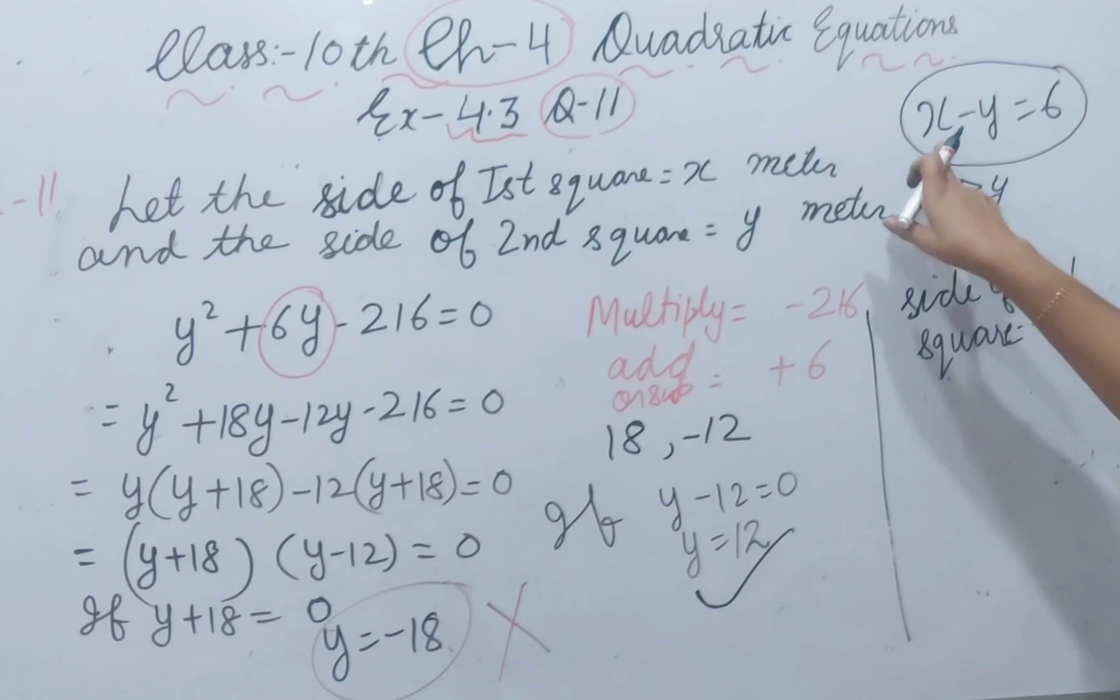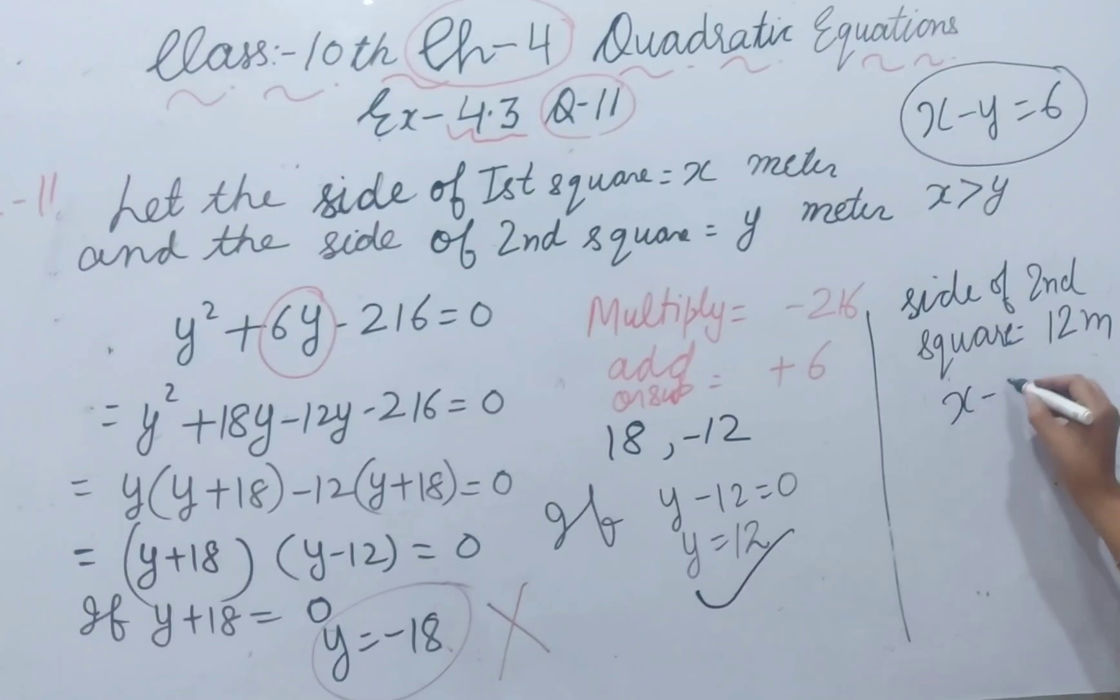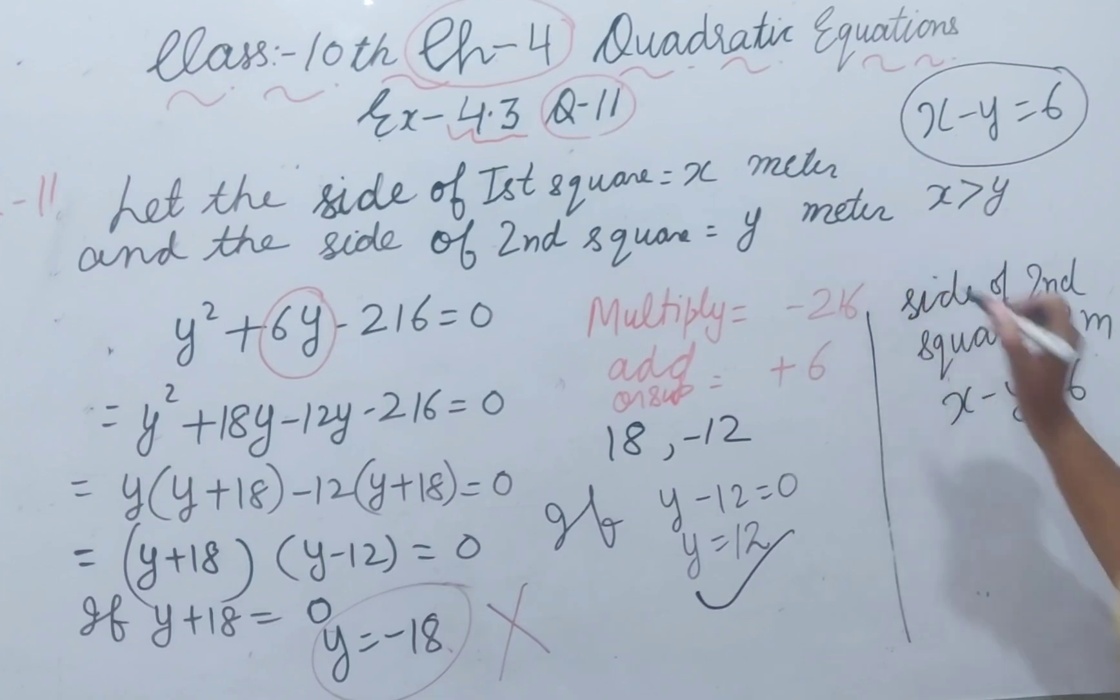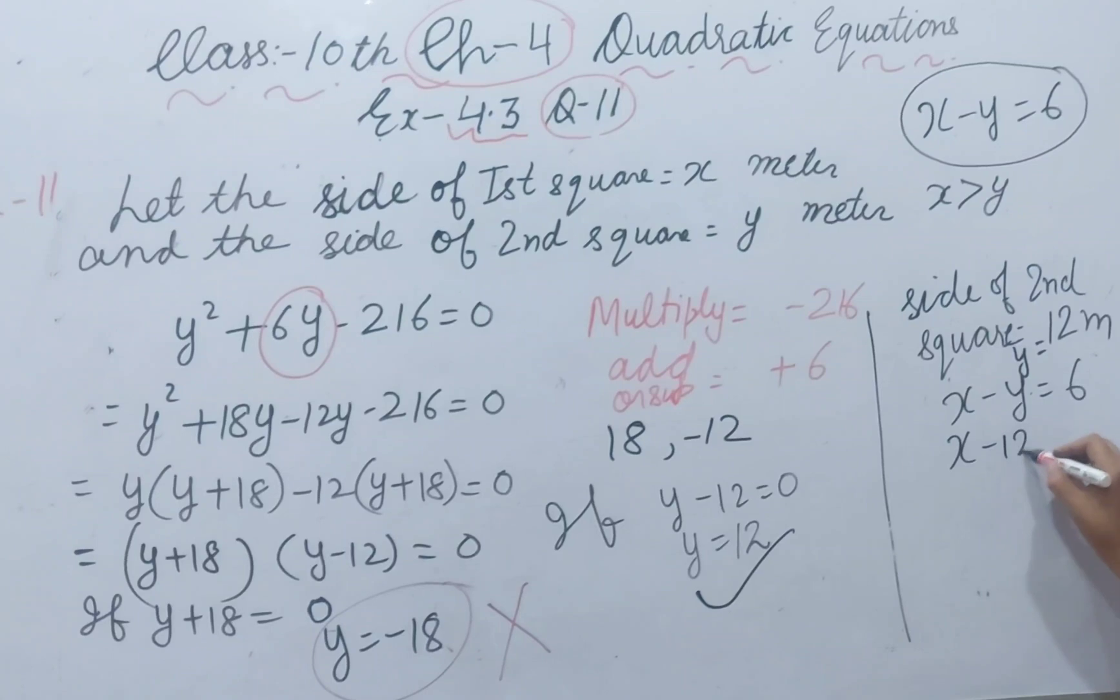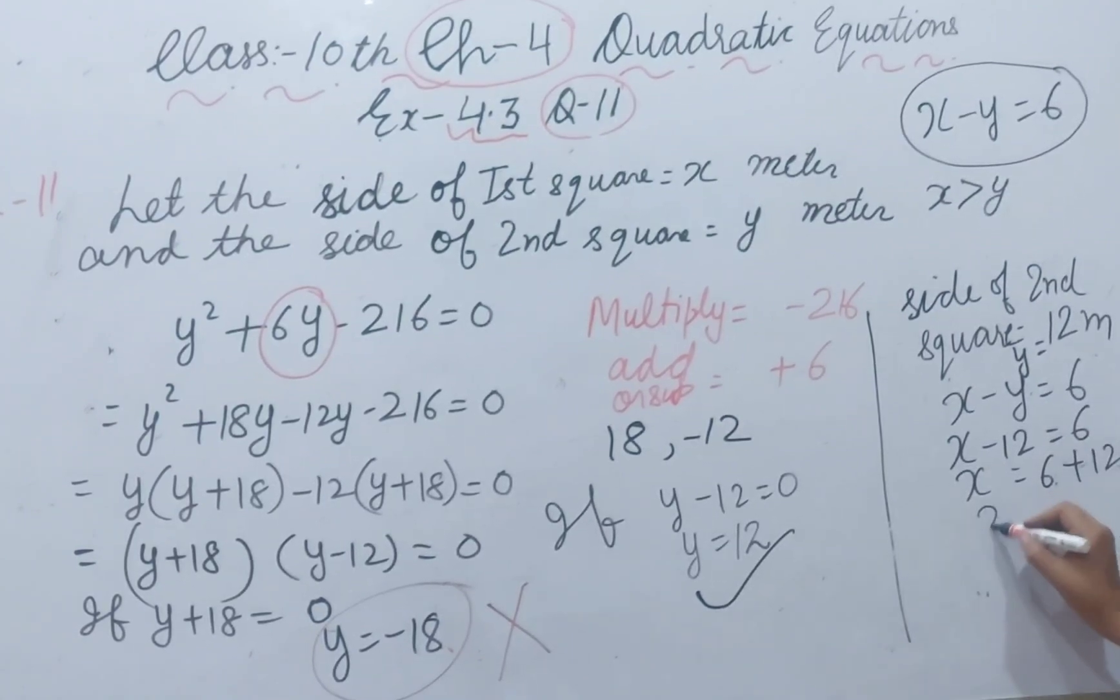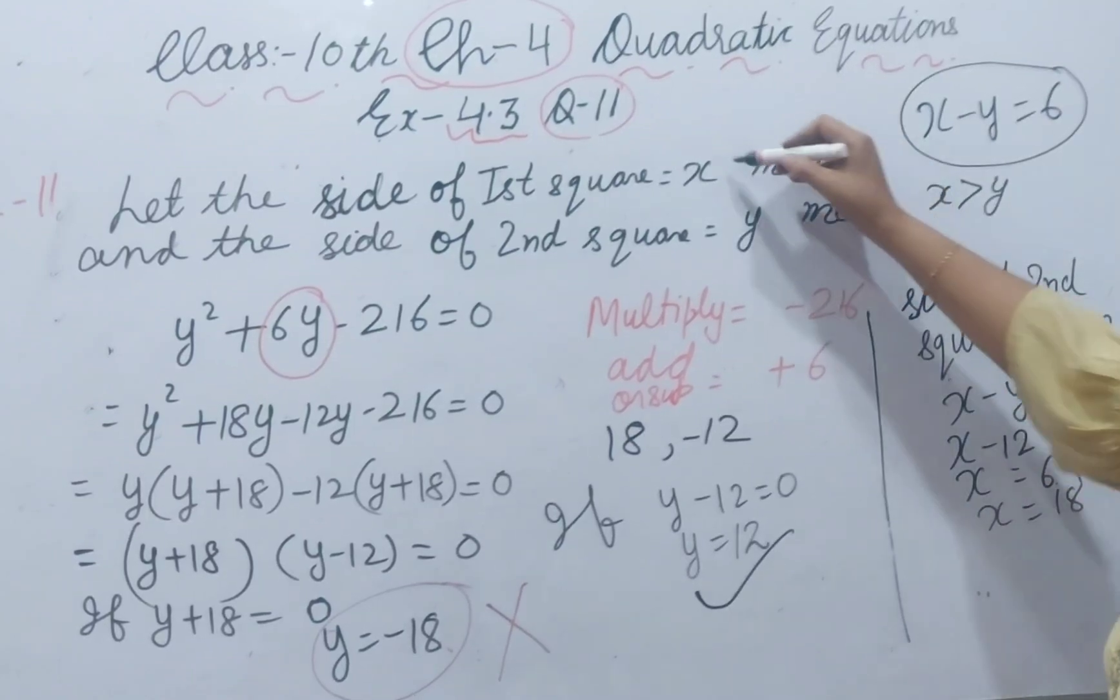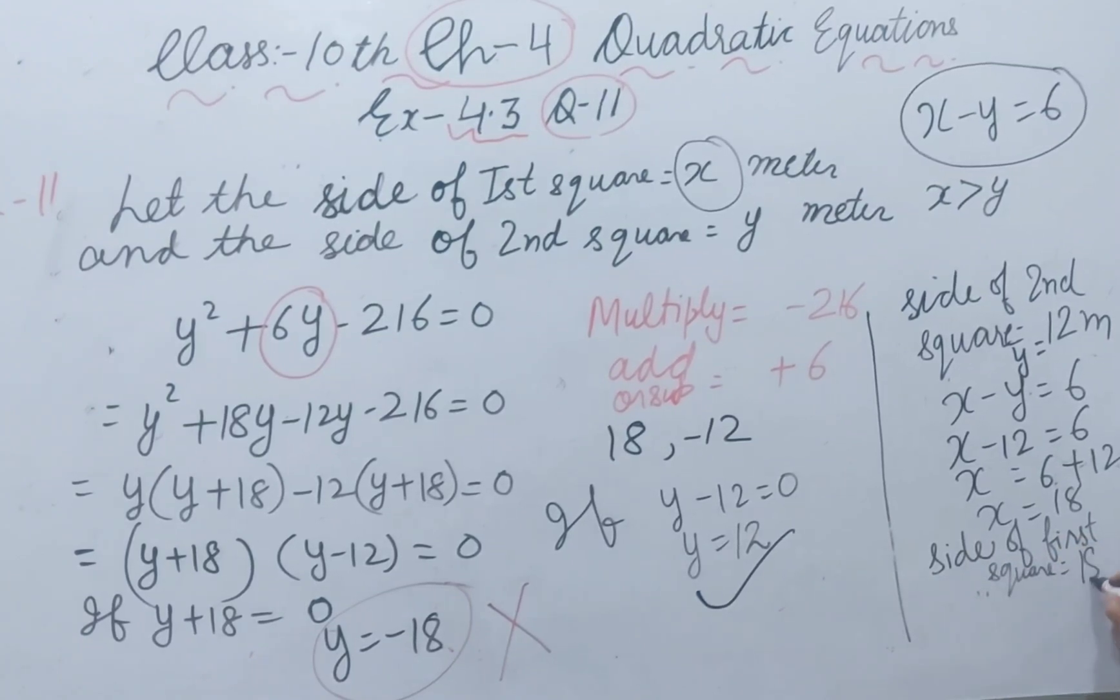From this equation, we have proved x minus y equal to 6. Now side of second square is y, that is equal to 12. So x minus 12 equal to 6. X is 6 plus 12, and x is 18. X is side of first square, that is 18.